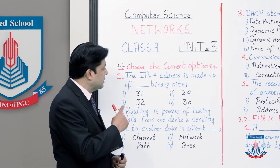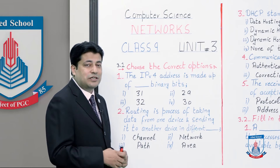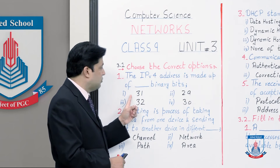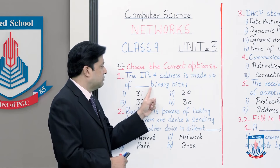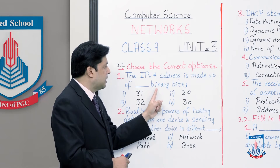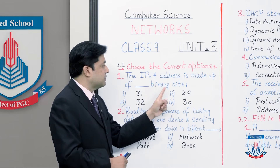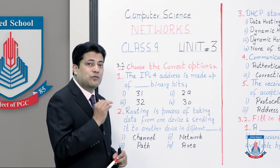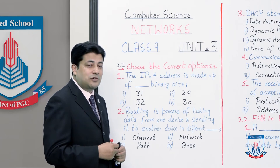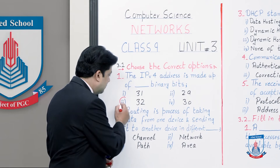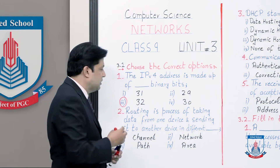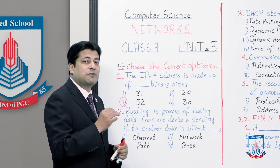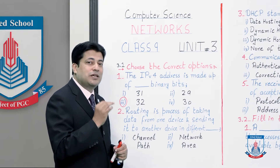The options available are: 31 binary bits, 29 binary bits, 32 binary bits, and 30 binary bits. You must remember well that IPv4 address is 32 bits. So circle option number 3 — 32 bits. Also remember that IP version 6 is 128 bits.